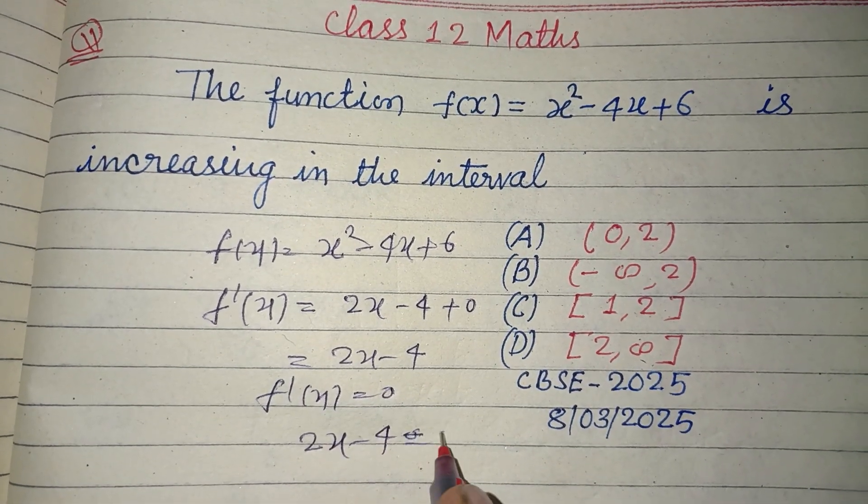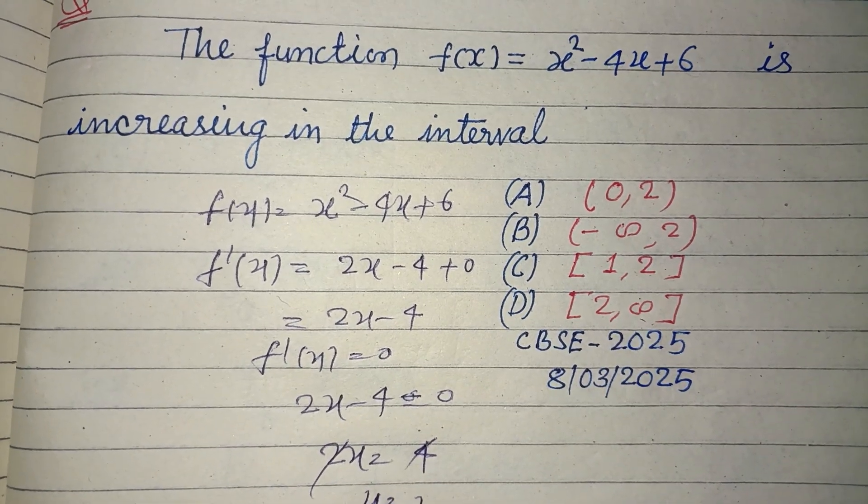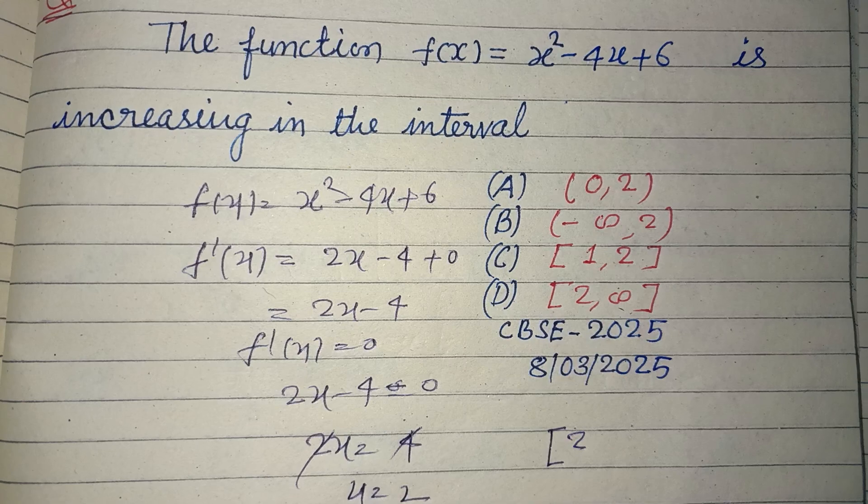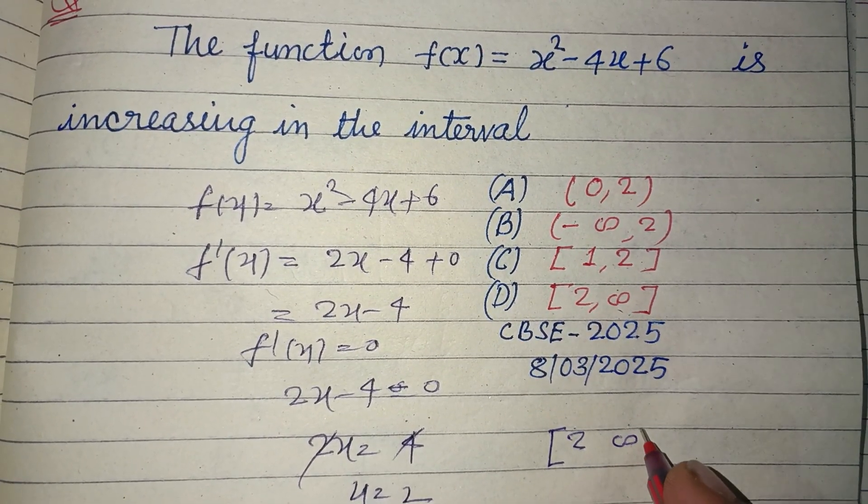2x - 4 = 0, that is 2x = 4 and x = 2. So here x = 2. Since 2 is included and other numbers are up to infinity, and infinity has no endpoint, therefore...